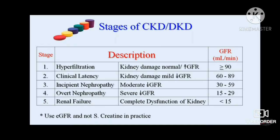For DKD to occur, there should be long-standing diabetes of more than 10 years, whereas for non-DKD it can be less than five years. Urine analysis can help with diagnosis — active sediments like hematuria or casts may be present in non-DKD patients, whereas in DKD there are bland sediments with no hematuria in most early stages.